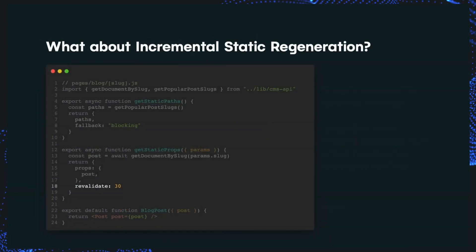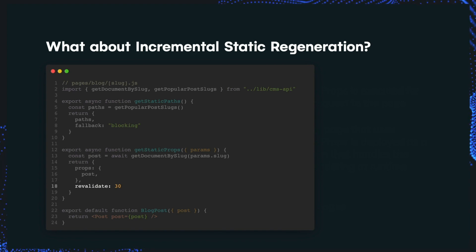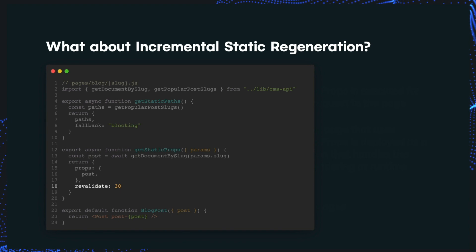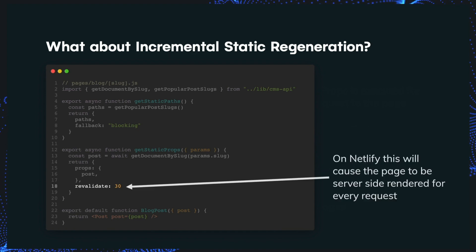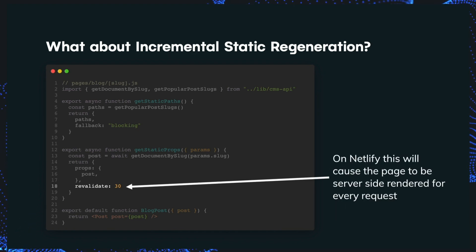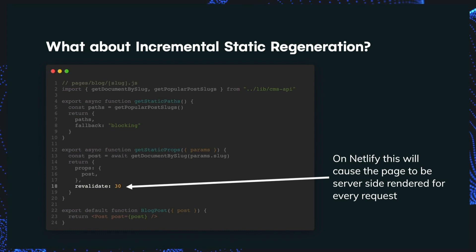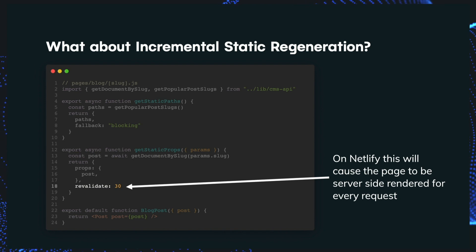Server-side rendering used to be the only feasible option for handling sites with a very large number of pages, but features like On-Demand Builders mean that we see teams using getServerSideProps less and less. The last data fetching option is incremental static regeneration, or ISR. We've chosen not to fully support this at Netlify, and instead we're investing in improving alternative approaches like On-Demand Builders. If you do use the revalidate property on Netlify, we will fall back to server-side rendering these pages on every single request — this probably isn't what you intended, and we recommend you use the other techniques we've looked at in this talk.